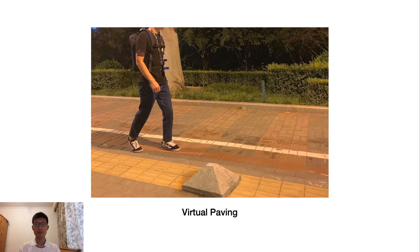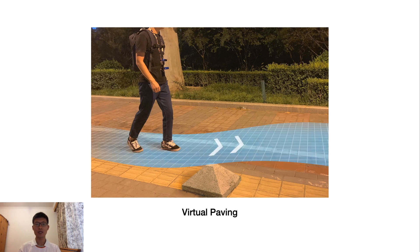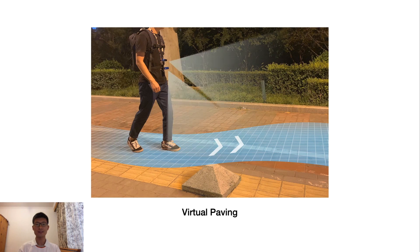In this paper, we propose Virtual Paving, which aims to support independent navigation by rendering a safe and smooth path to visually impaired people through non-visual feedback. Conceptually, Virtual Paving not only inherits the benefits of tactile pavements, but also saves the cost of physical deployment and maintenance. Virtual Paving relies on three techniques: sensing, planning, and rendering.